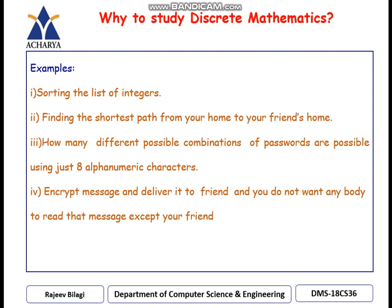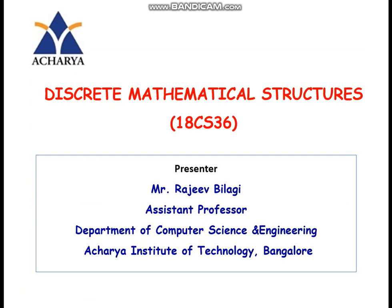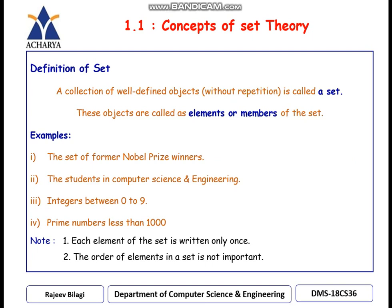Now, with all the basic introduction about discrete mathematics, we are going to start with the first concept, which is set theory. A definition of a set: a collection of well-defined objects without repetition is called a set. The objects which are present in a particular set are called elements or members. Without repetition means the objects present in the set should not be repeated.